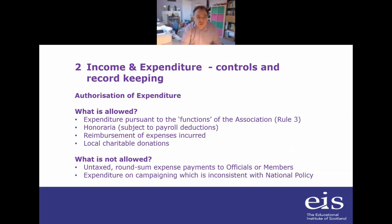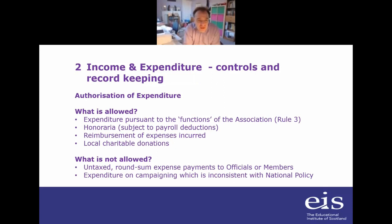We'll come on to income, expenditure and controls in a little bit more detail. So I think it's probably worth going back to the constitution and just thinking about what is allowed and what's not allowed in terms of expenditure. Constitutions do not contain a clear list of what you can and can't pay for, so it's a matter of looking at different proposed expenditures in the context of different parts of the constitution.